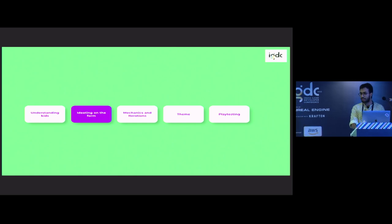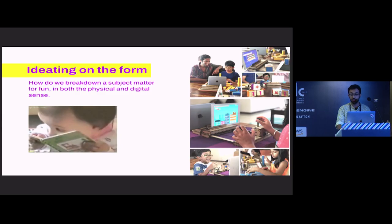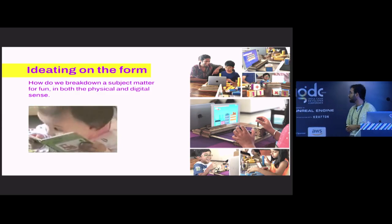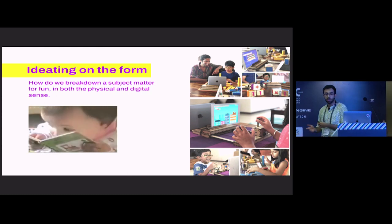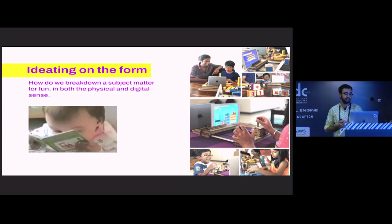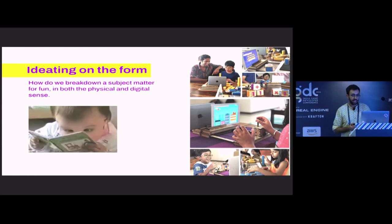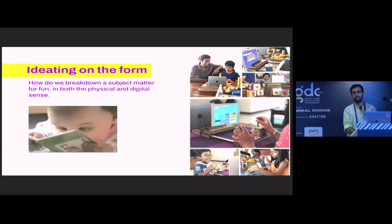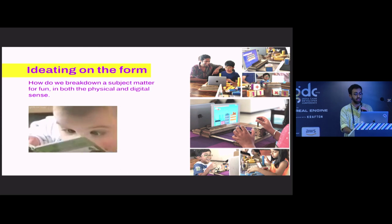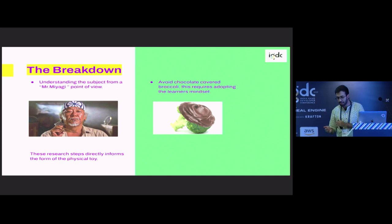After the crucial step of understanding kids, what we do is we start ideating on the form itself, the industrial design of the toy. Before we jump into maybe sketching out, we have to understand coding as a subject. We break down the subject matter in terms of physical and digital sense, because some aspects can be addressed digitally, some can be addressed physically.